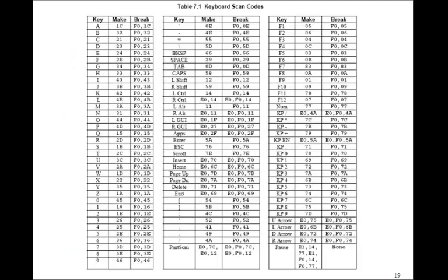Here are our keyboard codes again. If you press key A, the make code 1C will end up in key_val_one. If you immediately release it, F0 will end up in key_val_two and then 1C will also end up in key_val_three. However, if you hold the key down you get the typematic feature, so 1C will repeat itself — the 1C will keep being displayed in key_val_two until you release it. When you release it, F0 and 1C will be displayed in key_val_two and key_val_three.